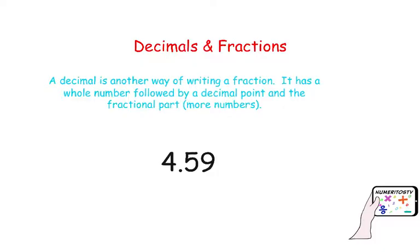Here is a clear example: 4 and 59 hundredths, or 4.59. As we can see, you have a whole number to the left of the decimal point and then you have more numbers to the right of the decimal point. These numbers represent a fractional part.